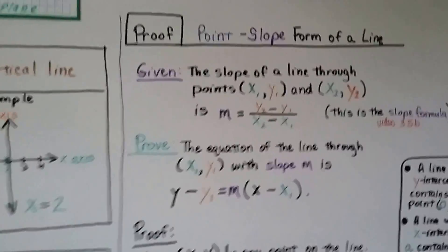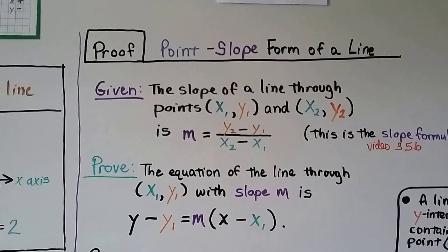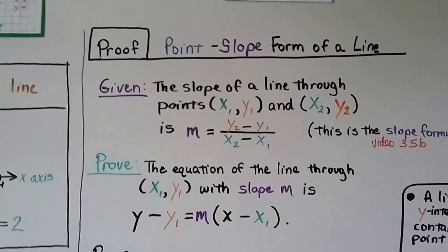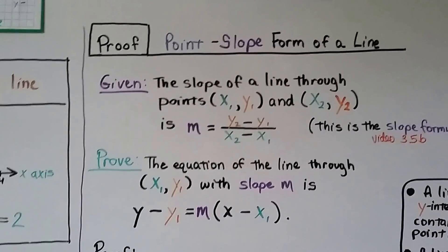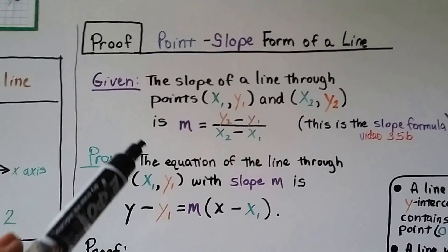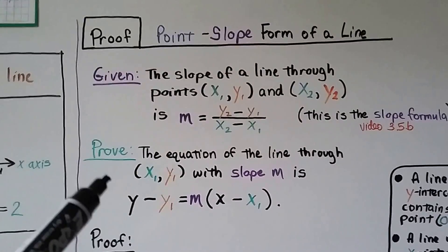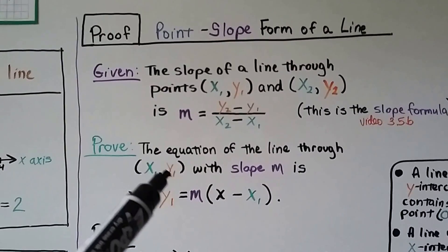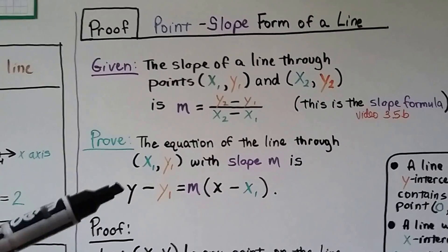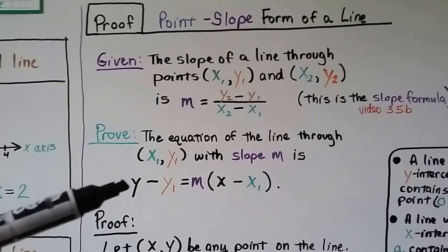Here's a proof of the point-slope form of a line. Our given is the slope of a line through points x sub 1, y sub 1 — the first point — and x sub 2, y sub 2 — the second point — using the slope formula, which we did in 3.5b. We need to prove the equation of a line through x sub 1, y sub 1 with slope m, which is the point-slope form of a line.